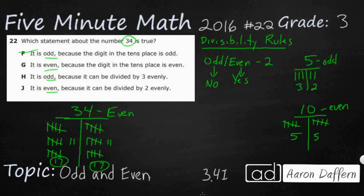So we can go ahead and mark off F and H. And we're going to choose between G and J. It's even because it can be divided by two evenly. Well, it can be divided by two evenly. It's divided into two sets of 17. We can say 34 divided by two equals 17. And when it says evenly, that means nothing left or no remainders, nothing left over, or there's not any unequal groups.